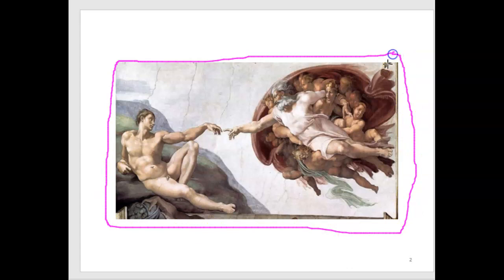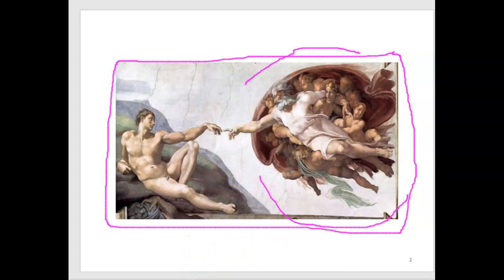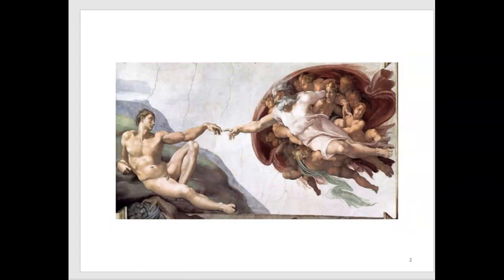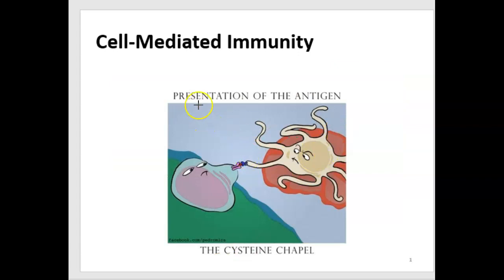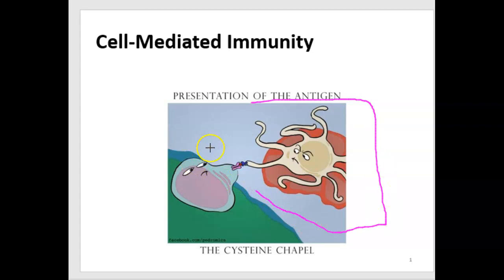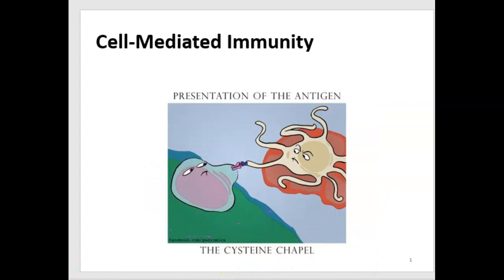In the Sistine Chapel, Michelangelo painted a picture where God is touching Adam, and the presentation of an antigen to a T lymphocyte is compared to that image. There's a sequence of amino acids on this T cell receptor — called cysteine — that helps recognize the antigen.